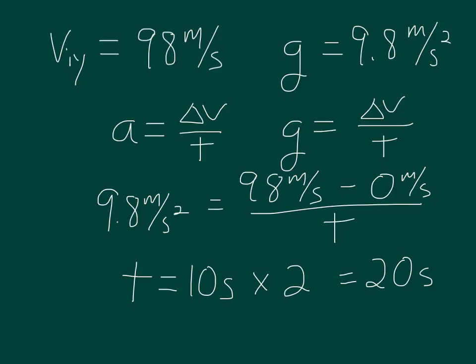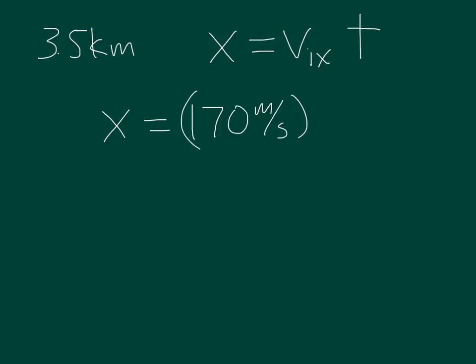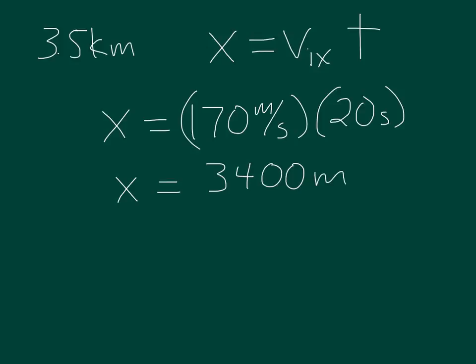Now I'm ready to find out: will he make it? It's an x question. He needs to go 3.5 kilometers. Using x equals V initial x times t: x equals 170 meters per second times 20 seconds, which gives 3,400 meters. Since there are 1,000 meters in a kilometer, that's 3.4 kilometers. He goes 3.4 kilometers but needed to go 3.5 kilometers, so the answer is no — he doesn't make it.